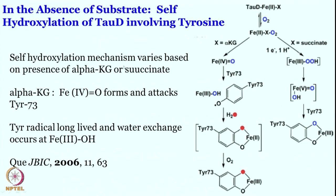This is the self-hydroxylation mechanism — self-hydroxylation of the enzyme is happening in the absence of organic substrate. This mechanism will vary based on what is present. If you have alpha-ketoglutarate, that is the pathway. But if you run out of alpha-ketoglutarate, you can essentially have succinate, because succinate is the product derived from alpha-ketoglutarate, and succinate is going to replace alpha-ketoglutarate if it is not present in sufficient amount.